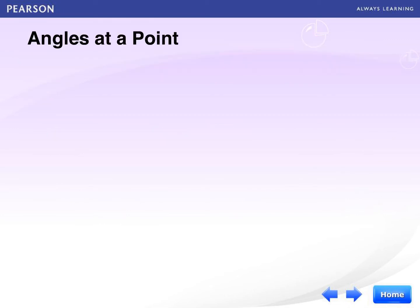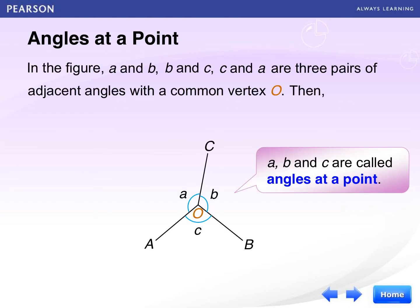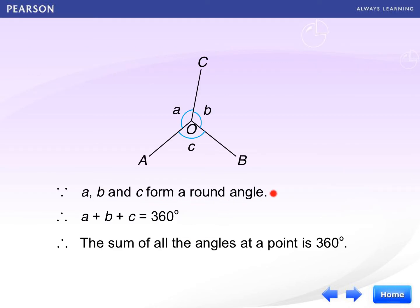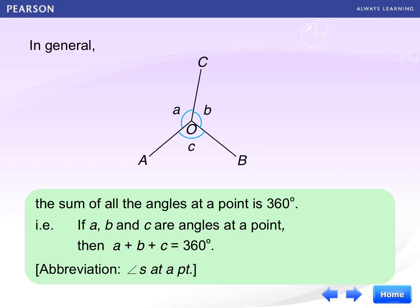Other than adjacent angles on a straight line, we may now talk about angles at a point. In the figure, A, B, and C are three adjacent angles and they have a common vertex O. The three angles A, B, and C are called angles at a point. Actually, the angles form a round angle, so A plus B plus C equals 360 degrees. In general, if A, B, and C are angles at a point, then A plus B plus C equals 360 degrees. The short term for this is 'angles at a point.'